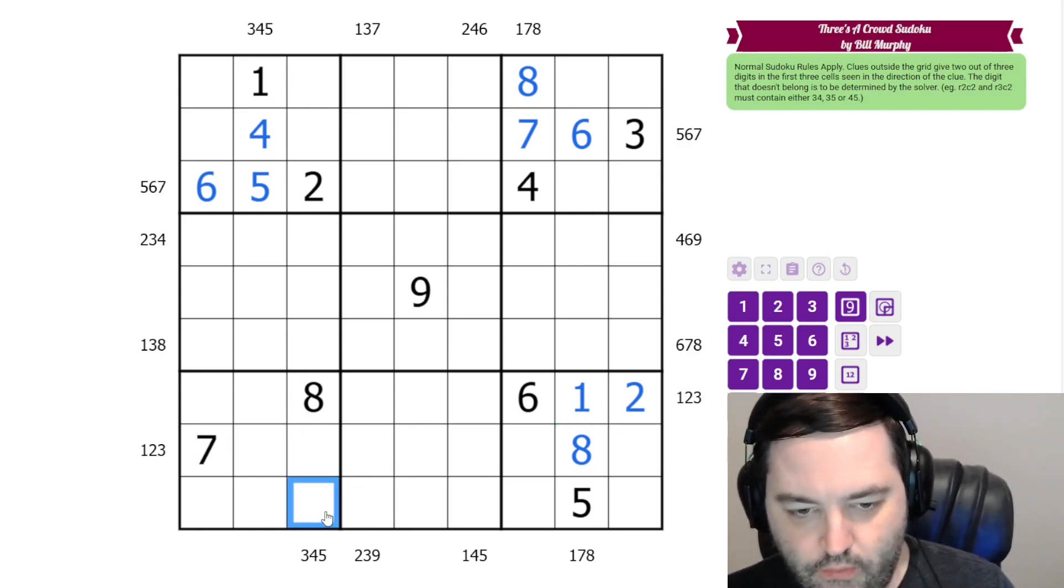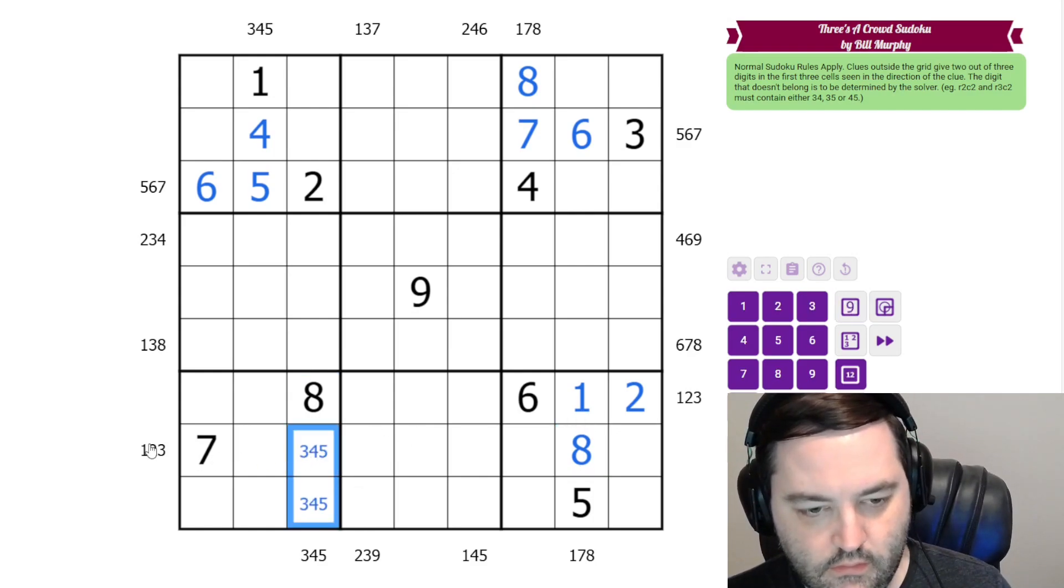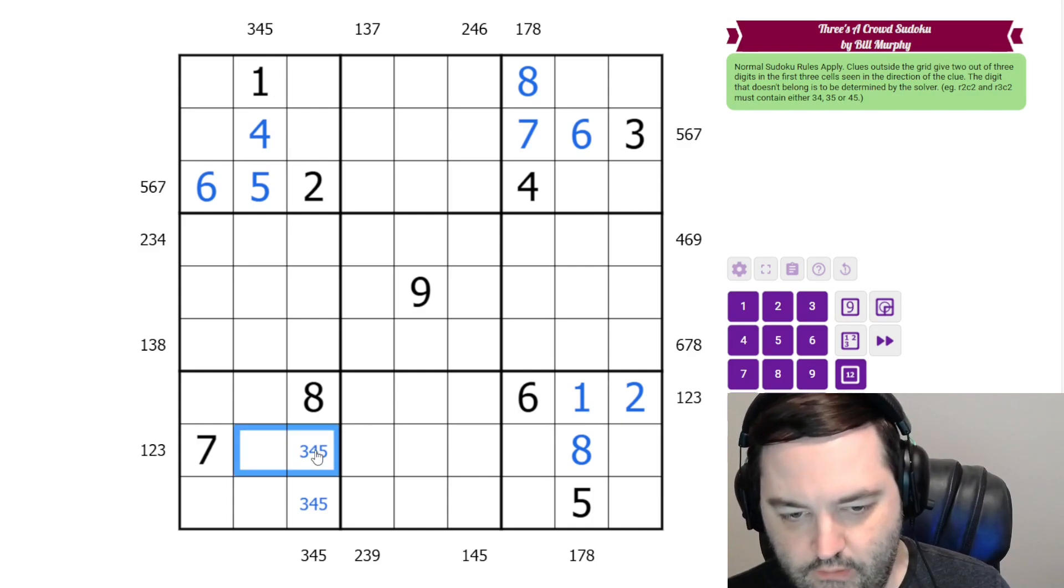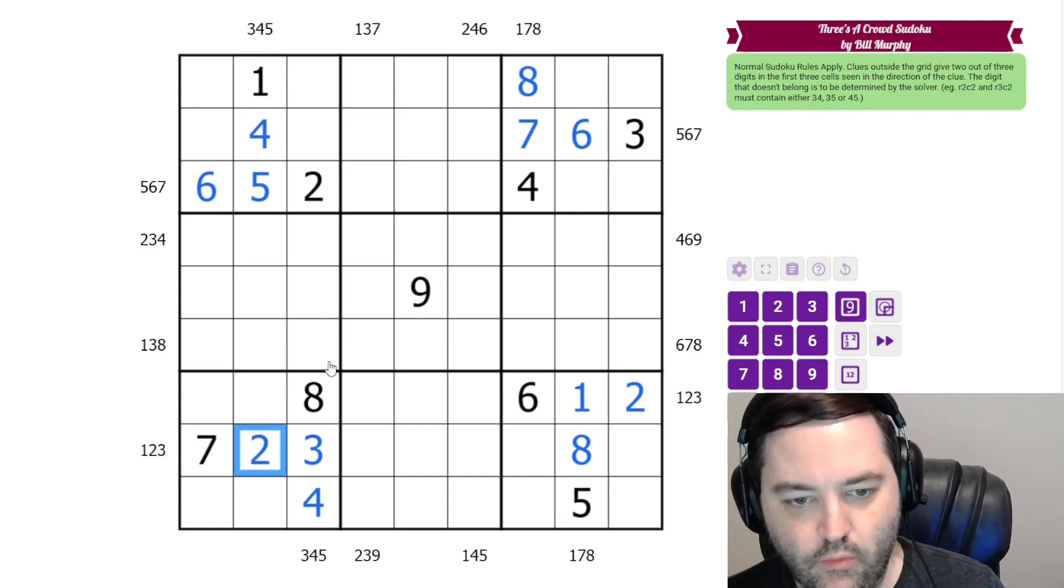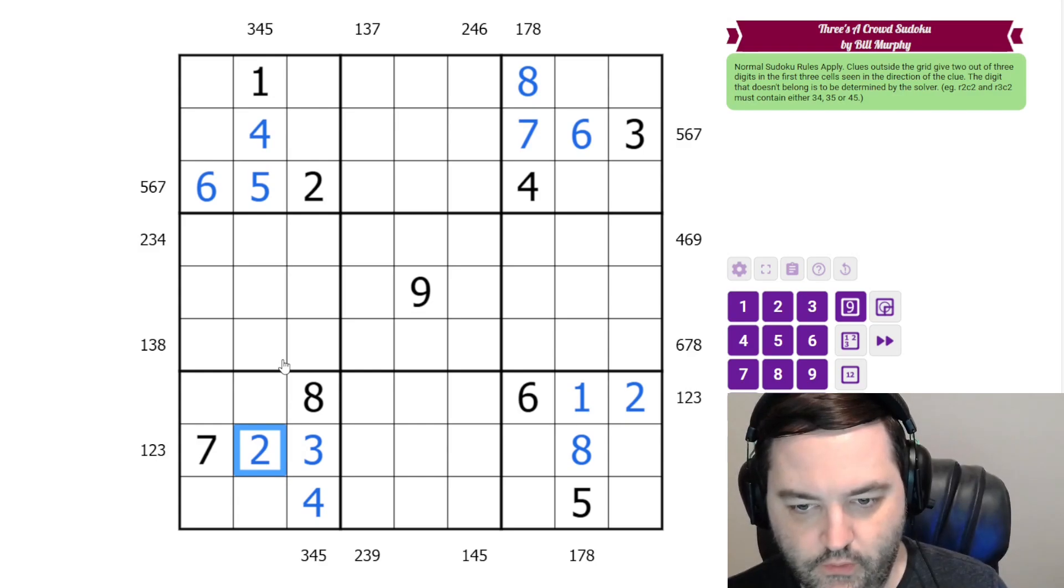And here we need three, four, five in these cells. We need one, two, three in these cells. So this has to be three. This can't be five, so it's four. This can't be one, so it's two. So that's most of the clues, but not quite all of the clues.